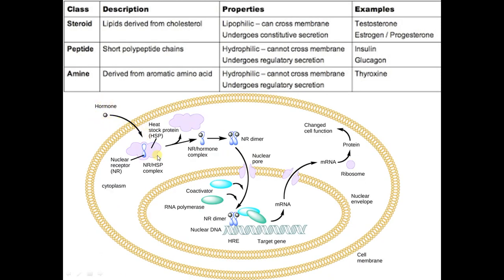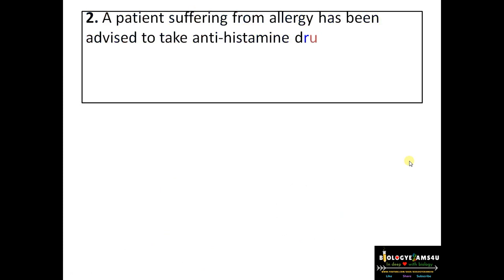The steroid hormone has a receptor inside the cell in the cytoplasm. The hormone binds to the nuclear receptor forming a hormone-receptor complex, then forms a dimer, enters the nucleus through a nuclear pore, and binds to the HRE (hormone responsive element) — a specific DNA sequence — which activates transcription of the involved genes. In contrast, for protein hormones the receptor is on the cell surface.